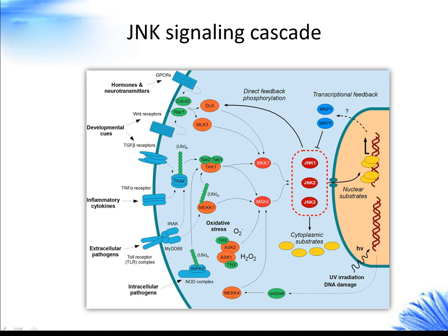JNK is also activated by inflammatory cytokines as well as growth factors. Signaling to the JNK module often involves the Rho family GTPase CDC42 and RAC. Those receptors or receptor-independent stress-induced membrane changes further transmit the signals to adapter proteins that can by themselves activate kinases in the MAP4K and MAP3K tiers of the JNK cascade.